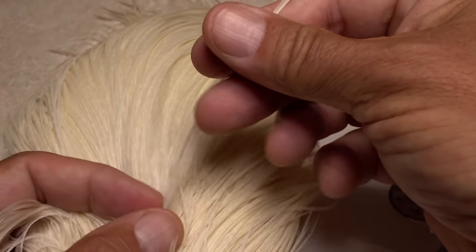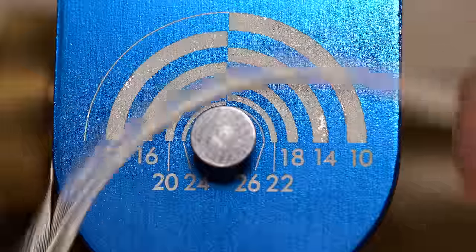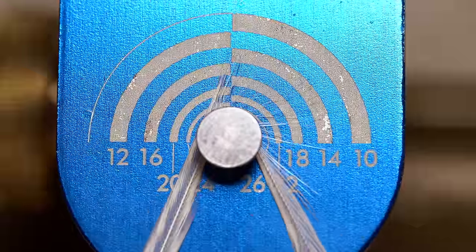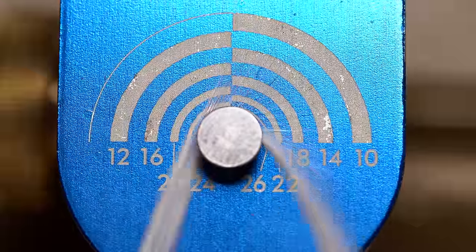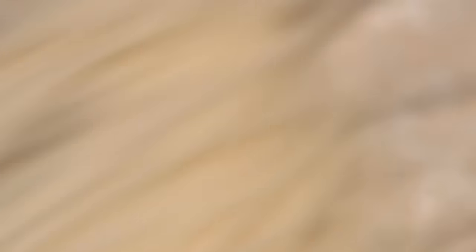Go back to the same hackle neck you used before and select a feather with fibers of full hook size larger than the hook you're using. Once you've identified an appropriately sized feather, pluck it free from the skin.